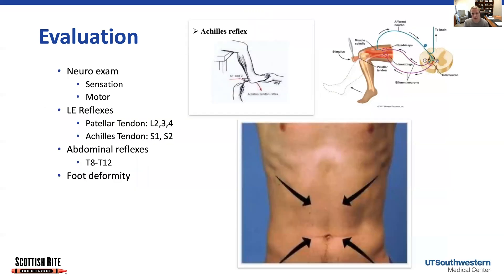The next step in evaluation is to do a thorough neurologic exam. We look at sensation of the lower extremities and motor function, testing all the motor groups, and then we look at reflexes. The three we look at are the patellar tendon, Achilles tendon, and abdominal reflexes. The patellar tendon reflex tests the L2, L3, and L4 nerve roots. The Achilles tendon reflex tests S1 and S2. We're really looking for symmetry — it's okay to be a little hyperreflexic if it's symmetric on both sides. The abdominal reflexes give us a gauge of the thoracic spinal cord.